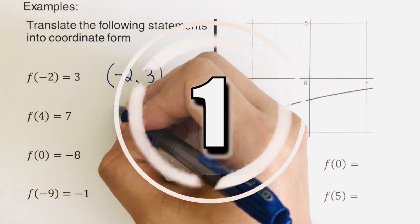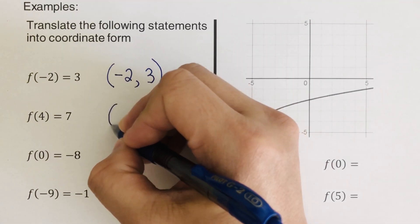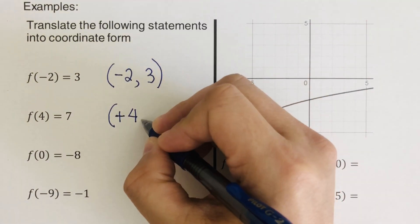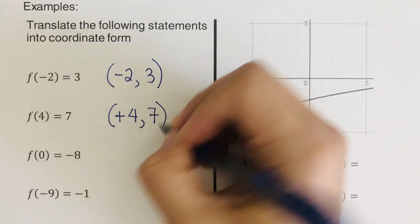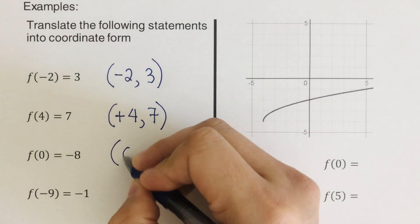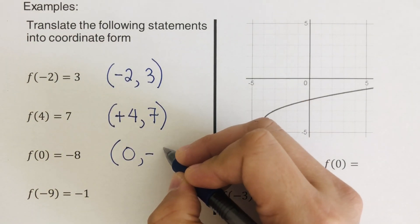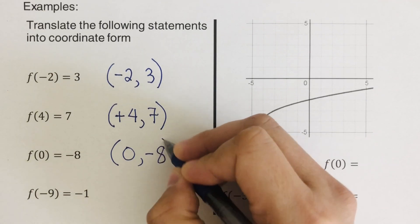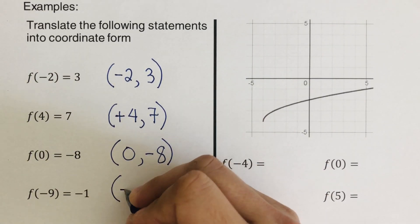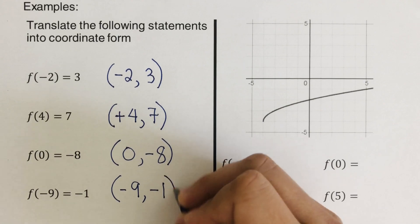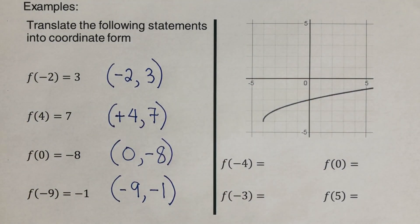The first one would be positive four and seven. The second one would be zero and negative eight. And the third one would be negative nine and negative one. Now let's move on to the next one.